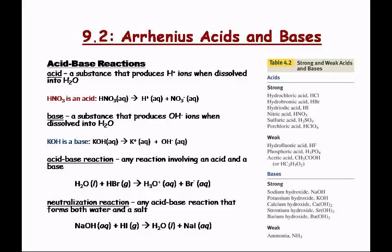An acid is a substance that produces hydrogen ions (H⁺), also called protons, when dissolved in water. For example, HNO₃(aq) — nitric acid — dissociates to produce H⁺ plus nitrate anions. If a substance produces protons in water, it's an acid.